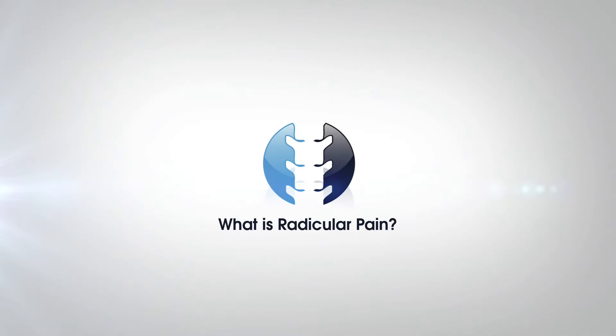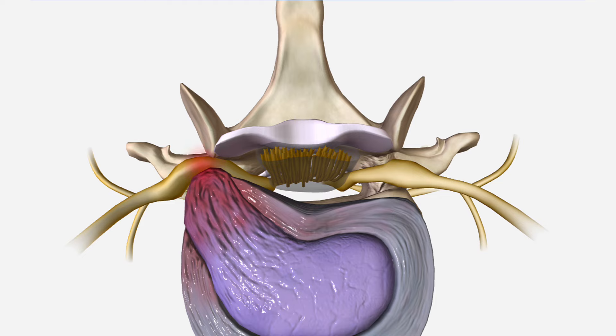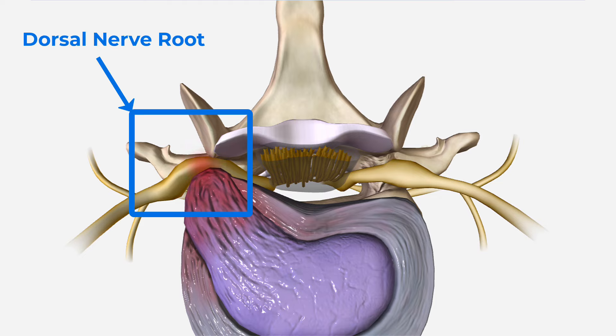So first of all, radicular pain — what is it, how does it occur, and how does it present clinically? Radicular pain is abnormal signals of pain coming from a particular part of the spine. As you can see, a herniated disc in the spine is pressing against a very particular part of the spinal nerve called the dorsal nerve root. The dorsal nerve root is the sensory nerve root, so it's all to do with sensations in our body. If you have a compression of that dorsal nerve root, it will send abnormal signals of pain down the arm if the problem is in the cervical spine, or down the leg if the problem is in the lumbar spine.